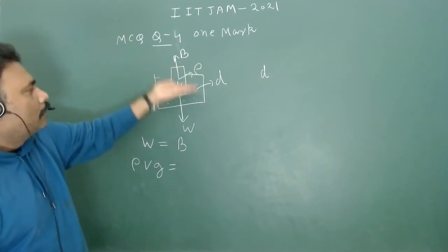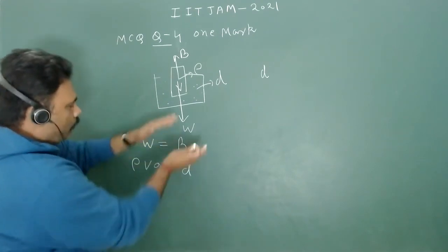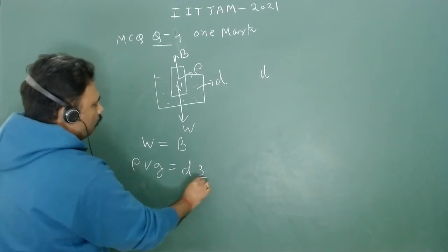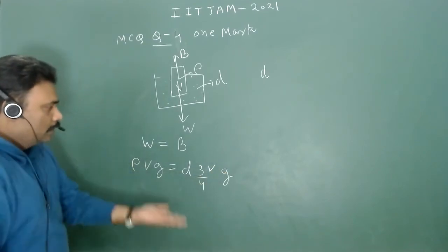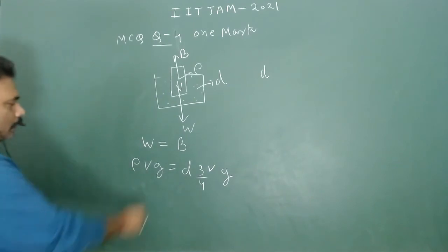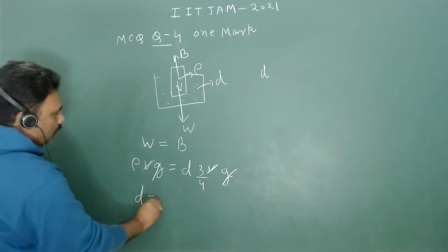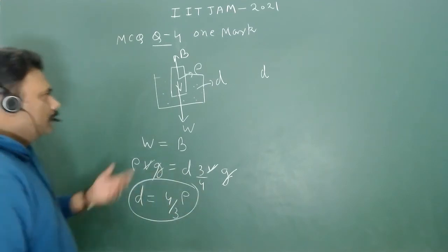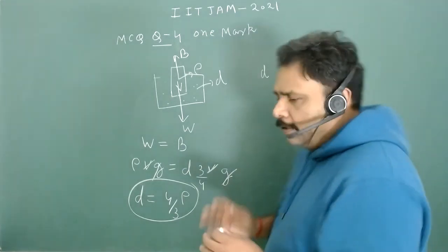The buoyancy force involves only three-fourths of the volume, since only that portion is submerged and displaces liquid. So buoyancy force equals d times (3/4)V times g. Cancelling g and V from both sides gives d equals (4/3) rho — that is your answer.